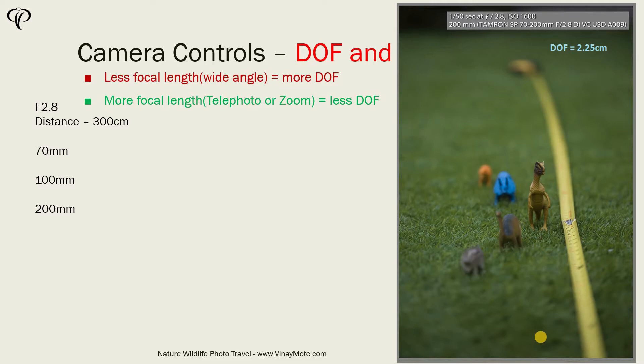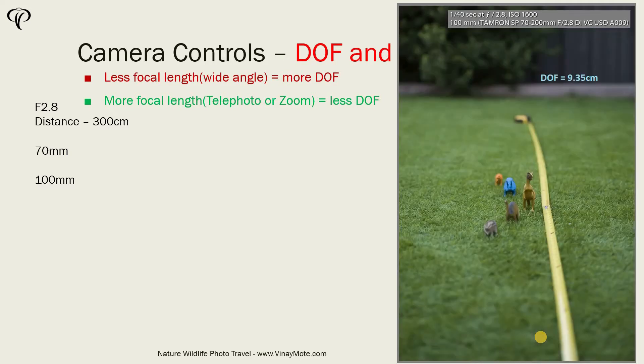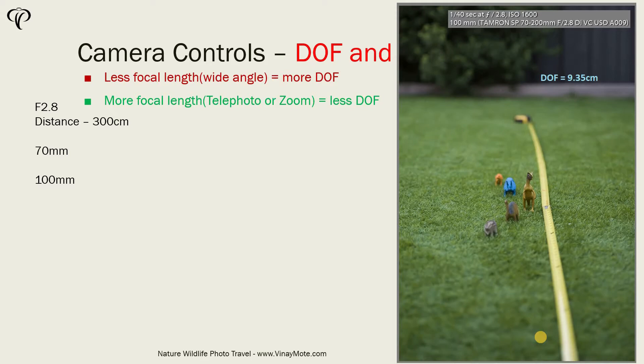So if you do exactly the reverse: at 200mm you get less depth of field, but if you go to 100mm then you get more depth of field, and if you go a little bit wider then you get even more depth of field. I hope you understood the concept of how changing focal length changes depth of field, and that's all in this video.